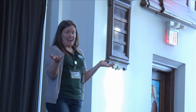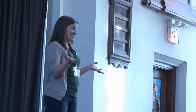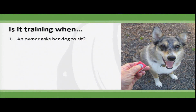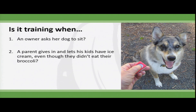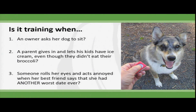I've got a little quiz for you. Show of hands: is it training when an owner asks their dog to sit? Yes, of course it's a training situation. How about when a parent gives in and lets their kids have ice cream even when they didn't finish their broccoli? Maybe not great training, but yes it is. How about when somebody rolls their eyes because their best friend had yet another worst-date-ever story? Yes, totally. So animal training isn't just sitting in front of your dog asking for a paw — it's lots of different things.